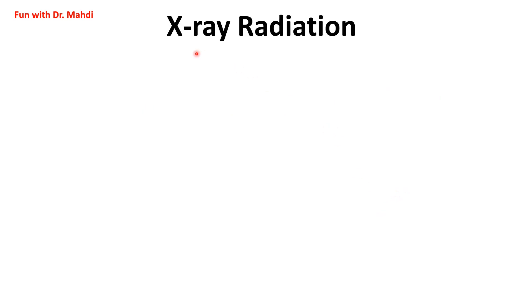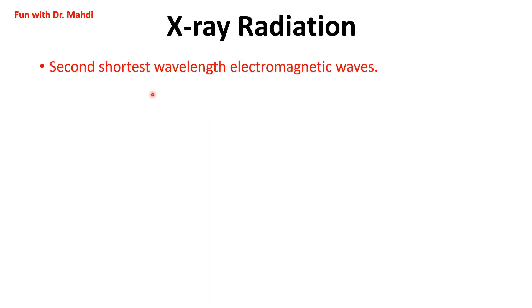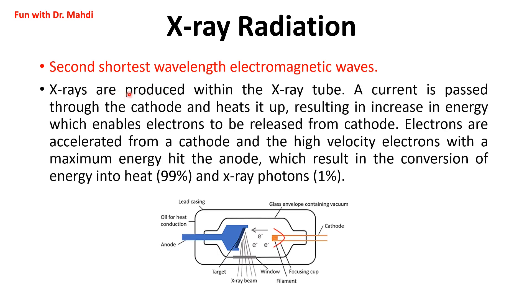X-ray radiation is the second shortest wavelength electromagnetic wave — the second most powerful after gamma radiation. X-rays are produced within the X-ray tube. Here you can see the structure of the X-ray tube, which contains a cathode and an anode, both made of tungsten. Tungsten is used because it can be manufactured into thin wire, has a high atomic number, and has a very high melting point. A current is passed through the cathode and heats it up.